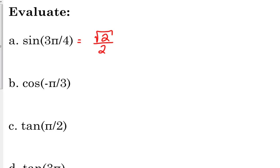Cosine of negative π over 3. So I'm going to forget about the negative for a second. I'm just going to focus on the π over 3. Cosine of π over 3 is 1 half. Now negative π over 3 is in the fourth quadrant, so x coordinates are still positive in the fourth quadrant, so it is just positive 1 half.